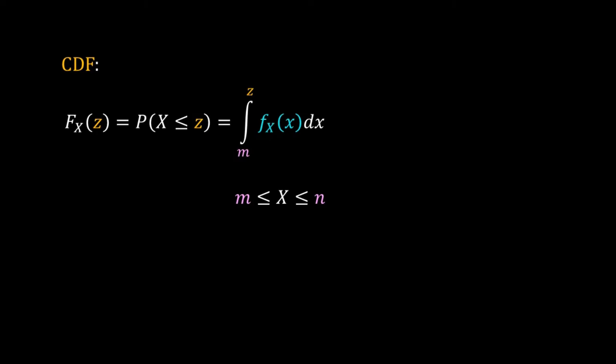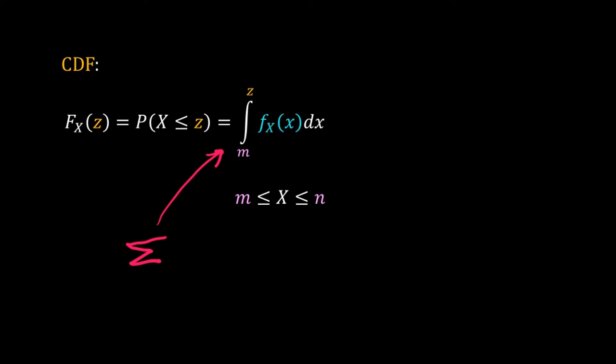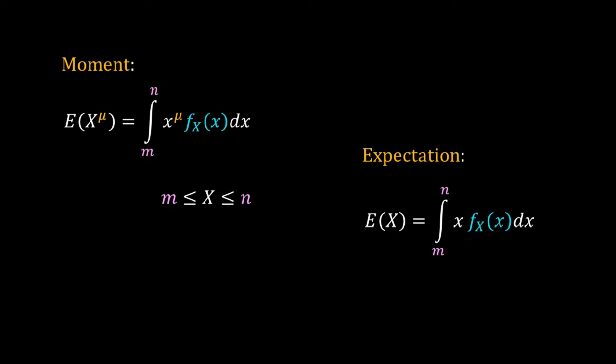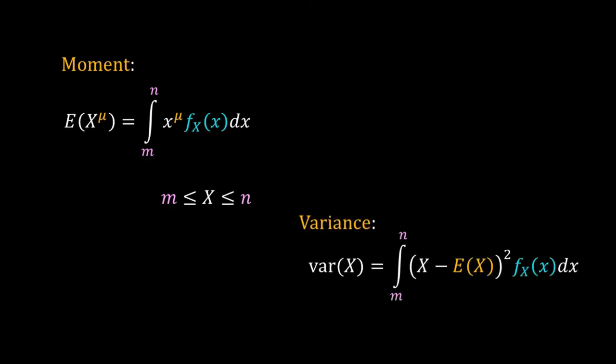Just like the CDF of a discrete random distribution, we can define the CDF of a continuous random distribution also. We use the PDF in place of the PMF, and in place of summation we have integration. Similarly, we define the μth moment as the integration of x to the power μ multiplied by the PDF, integrating over the complete interval from m to n. So if we know the PDF, we can find the expectation or mean and the variance. All the theorems of mean and variance learned earlier are valid for continuous distributions also.